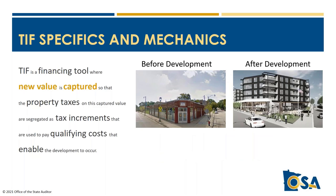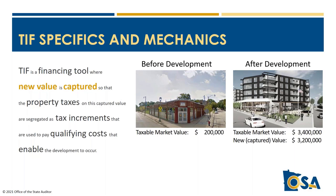Let's look at the second part of the definition: capturing new value. In our example, the taxable market value of the vacant, deteriorated, structurally substandard building before development is $200,000. The proposed development would be valued at $3.4 million after development, generating $3.2 million of new value captured for TIF purposes. Minnesota has a unique property tax system that converts taxable market values to a measure called net tax capacity.